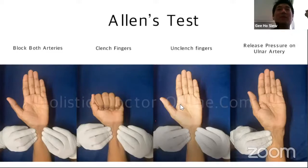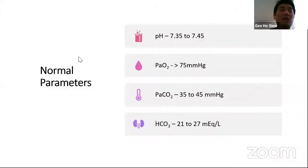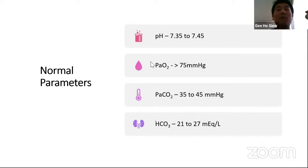When interpreting ABG data, there are a few things we look for: first, oxygenation and ventilation; followed by acid-base disorders; then electrolytes, hemoglobin, and abnormalities. The normal parameters for ABG are pH 7.35 to 7.45, PaO2 about 75 — though during COVID conditions we target PaO2 above 60, and in COVID ARDS sometimes as low as 55 mmHg. PaCO2 normal range is 35 to 45, but permissive hypercapnia is allowed in ARDS. Bicarb normal range is 21 to 27.